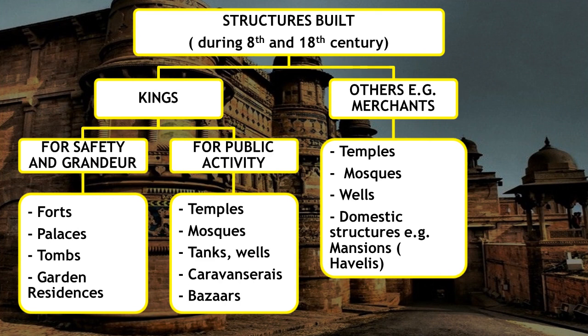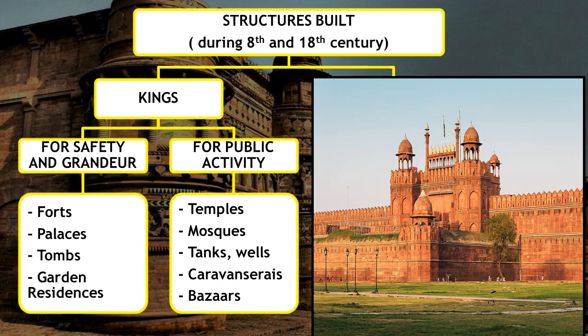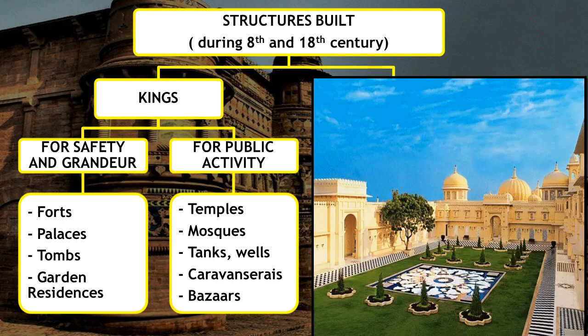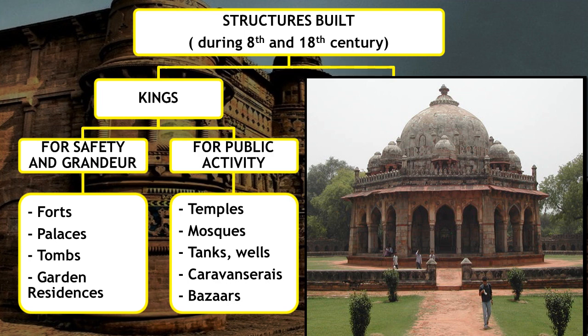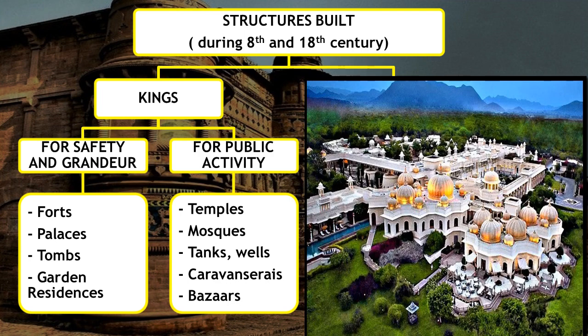During the 8th and 18th centuries, kings and their officers got two types of buildings or structures constructed. One was for the safety and grandeur of the king — that is, for showing power and wealth. For safety, they got forts, palaces, tombs, and garden residences constructed — that is, residences surrounded by gardens.